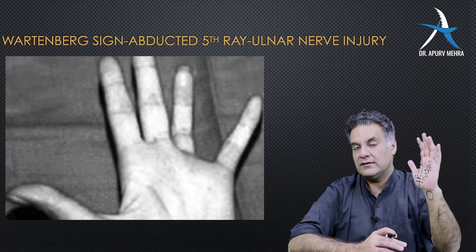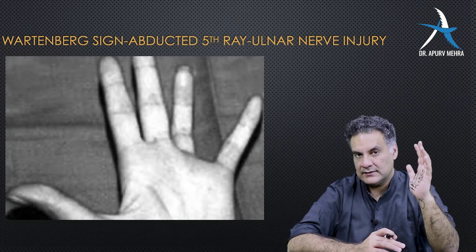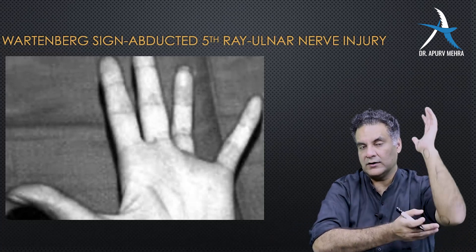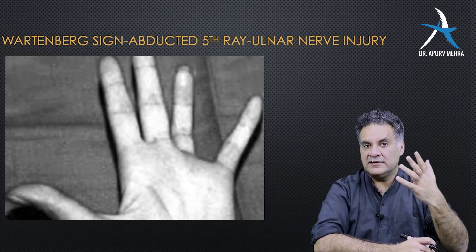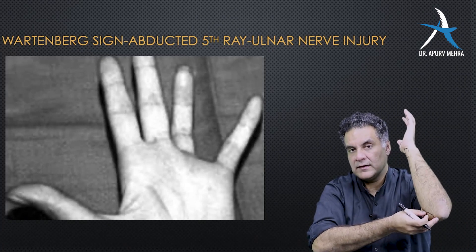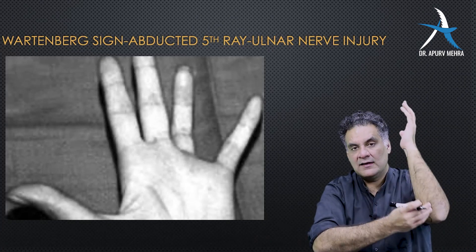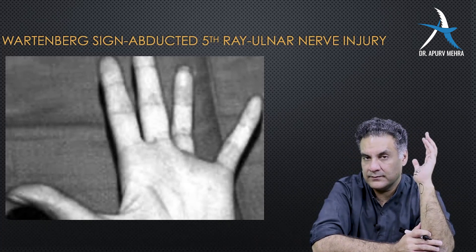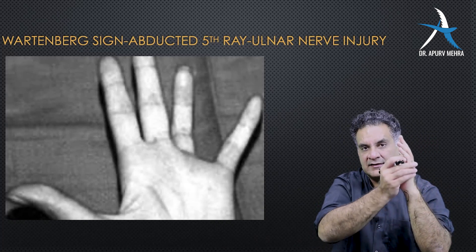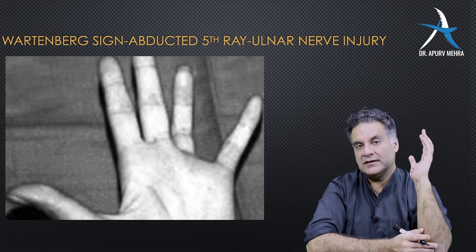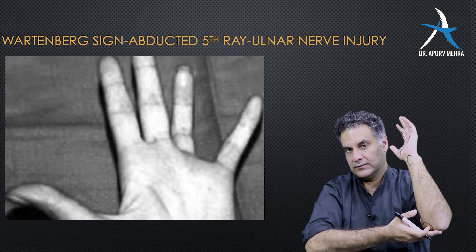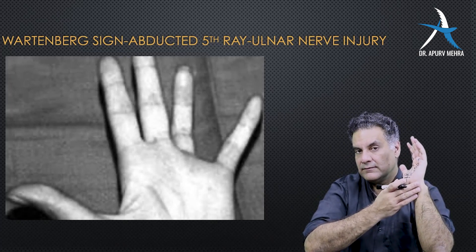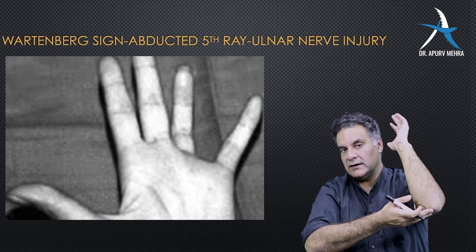Now when you have an ulnar nerve injury around the wrist or around the elbow, the difference is that around the elbow, the medial half of flexor digitorum profundus — the long flexors of the fingers — is supplied by the ulnar nerve. When the injury occurs around the wrist, because the FDP has been supplied around the elbow, it is spared.